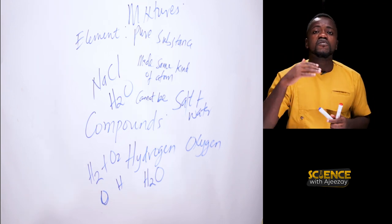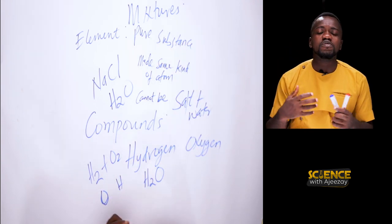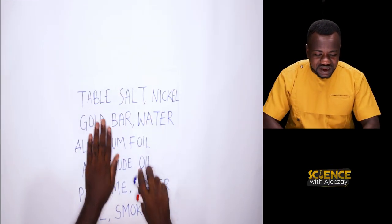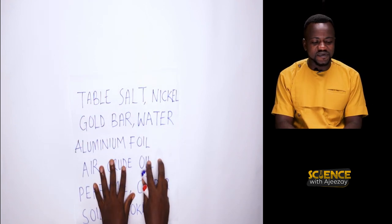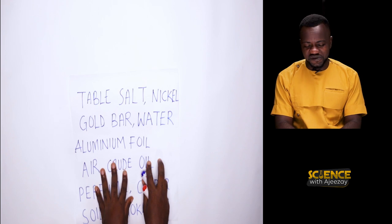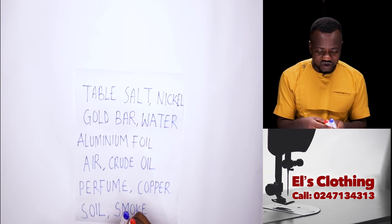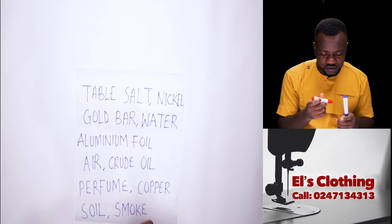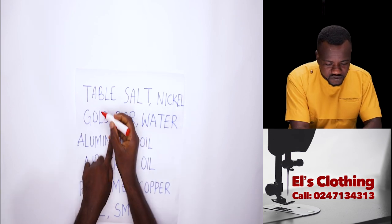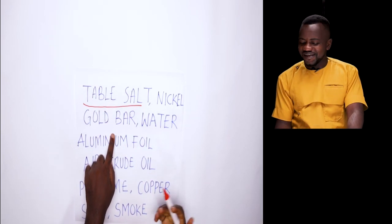So we've learned elements, compounds, and mixtures. I hope now we can define elements, compounds, and mixtures. Now let's do a classification exercise together. Let's classify this set of items as elements, compounds, and mixtures. We have table salt — table salt is a compound.